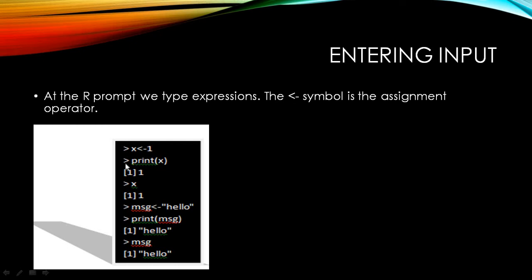Now I have the R prompt again. I want to print the value of X, so I type the command print(X) and I get the output as one, because I have assigned the value one to X. This is a very explicit way of printing the value of X. The other way is auto printing — by just typing X and hitting enter, the value of X gets auto printed as one.